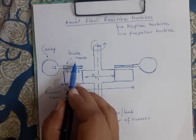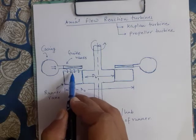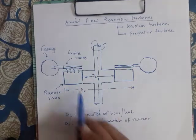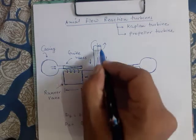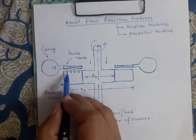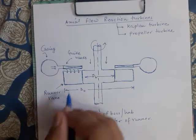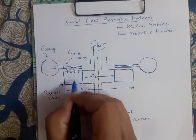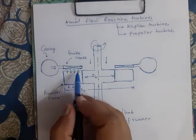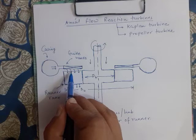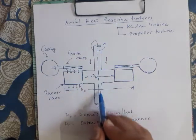The guide vanes are designed with a guide vane angle alpha that deflects the water so it enters the runner vanes in the axial direction. Please observe the arrows — the flow direction is along the axis. Water flows over the runner vanes in the axial direction and leaves in the axial direction as well. Axial direction means along the axis of the runner.